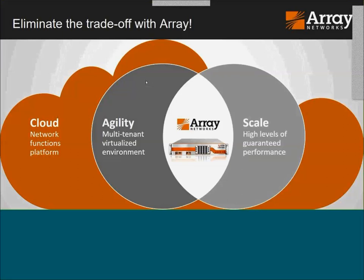The Network Functions Platform, our ABX series, sits at the intersection of agility and scale or performance. We have a multi-tenant virtualized environment — this appliance can support up to 32 virtual machines. But the way we implement this appliance is what makes the difference: we can provide a higher level of performance for virtualized network functions, and we can provide guaranteed performance for each VM and each function riding on it.